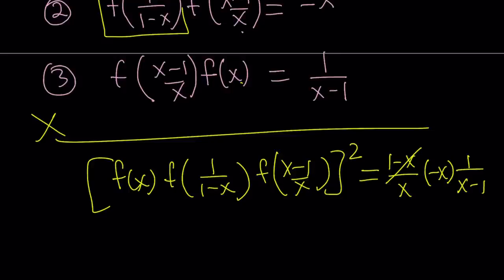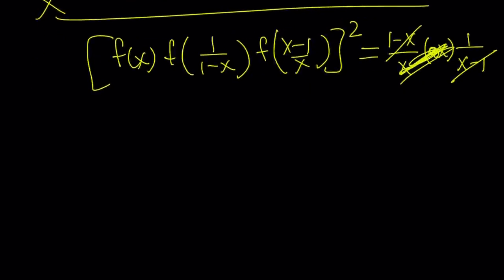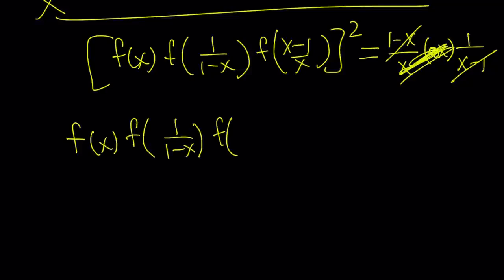As a result, the whole product squared equals 1. This is significant because we got a really simple result on the right-hand side. Let's look at two cases: something squared equals 1 means it can be positive 1 or negative 1.